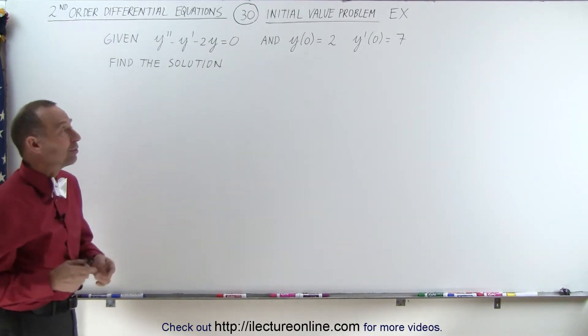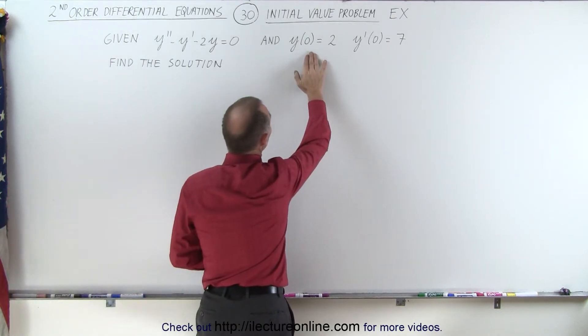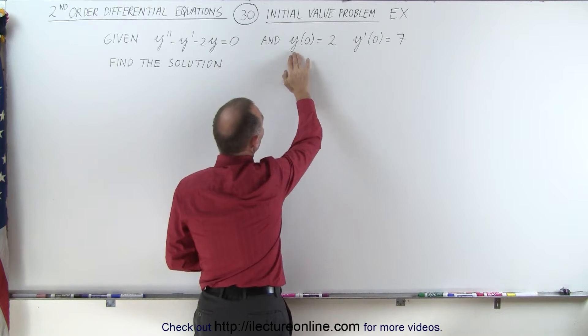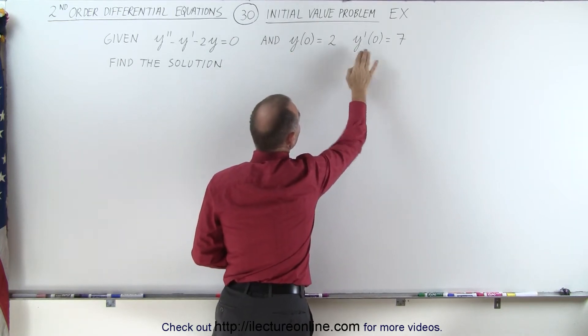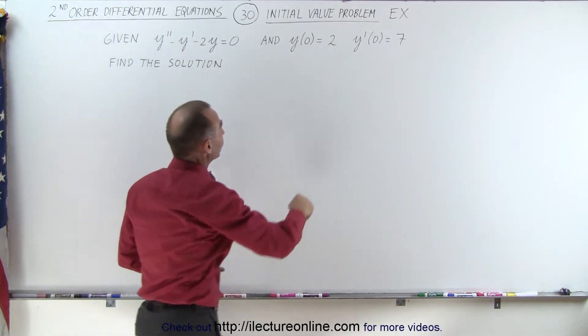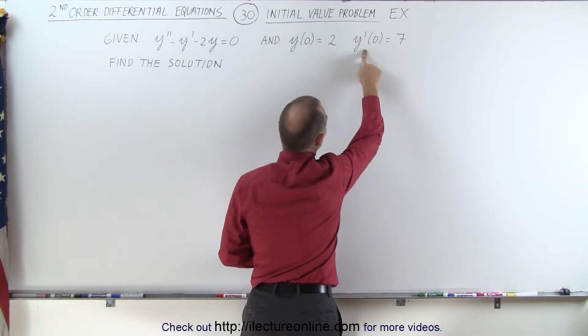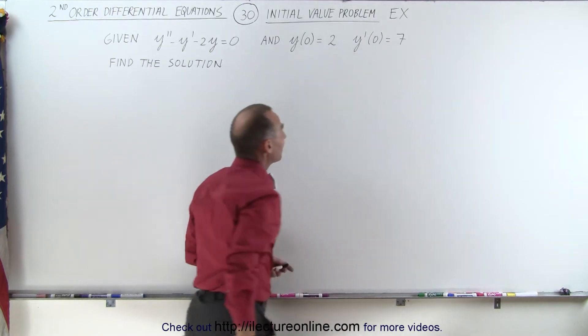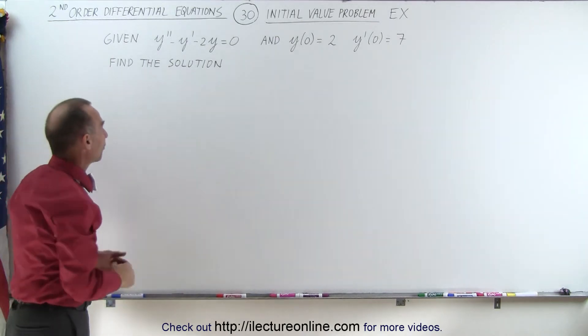And they've also given us some initial conditions. Therefore, it's called an initial value problem because they've given us the function evaluated at zero and the derivative of the function evaluated at the same time. Let's assume that this represents time, and so we know the function equals 2 at t equals zero, and the derivative of the function equals 7 when t equals zero. So find the solution to this differential equation.